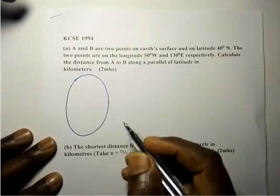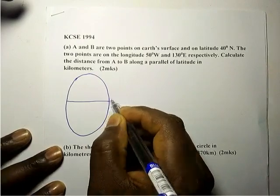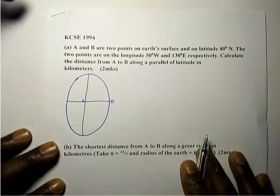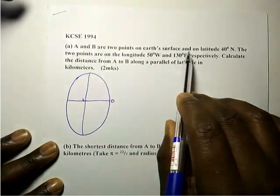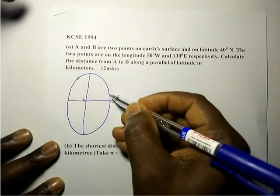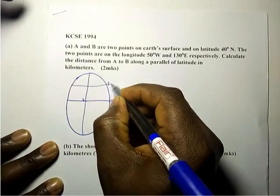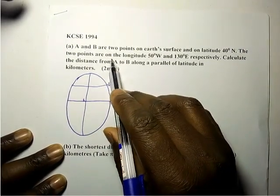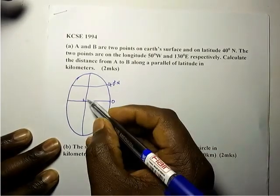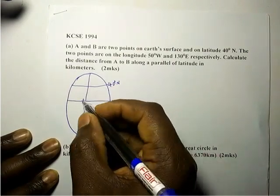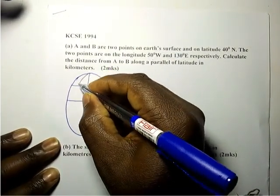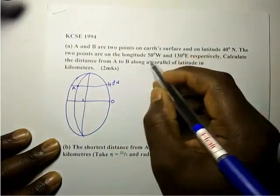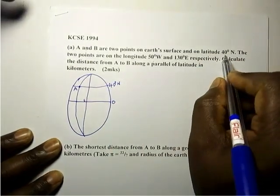Here is our sketch. This is the equator — zero degrees — and this is the prime meridian — zero degrees. We want to locate the latitude where A and B lie, which is 40 degrees north. Then we are told the two points are on longitude 50 west, so from the prime meridian going left to the west, 50 degrees — so here is point A. And B is on longitude 130 east on the same latitude.